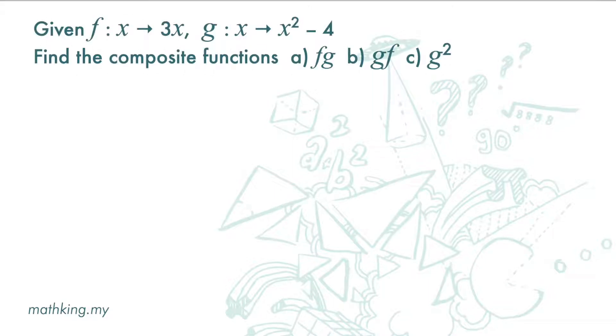Given f maps x to 3x and g maps x to x squared minus 4, find the composite functions: a) fg, b) gf, and c) g squared.